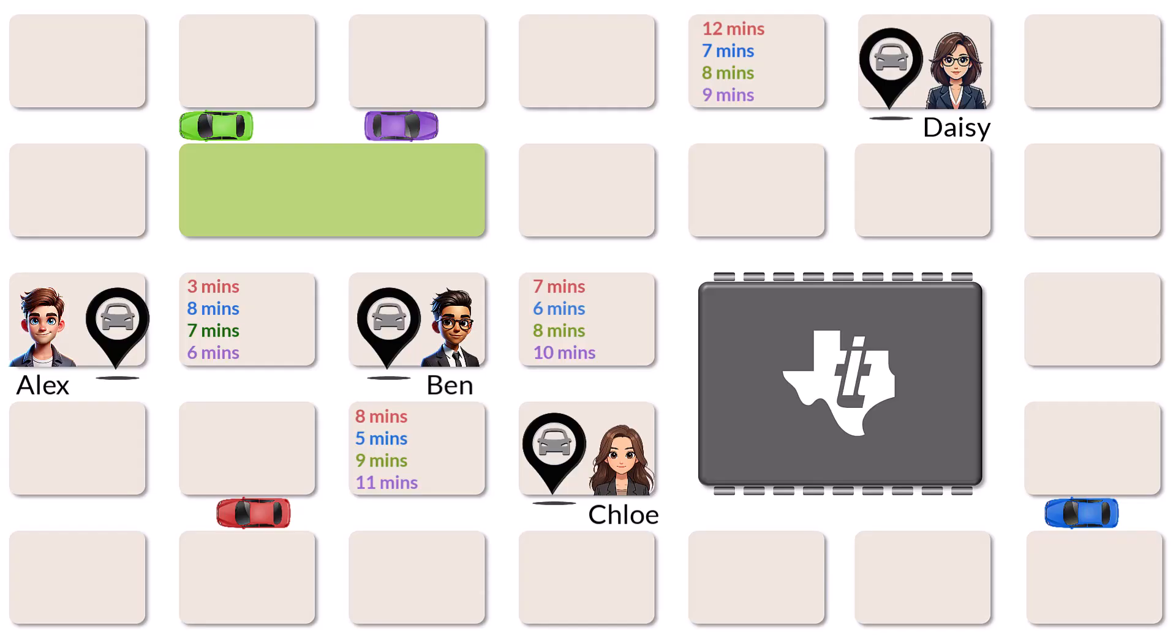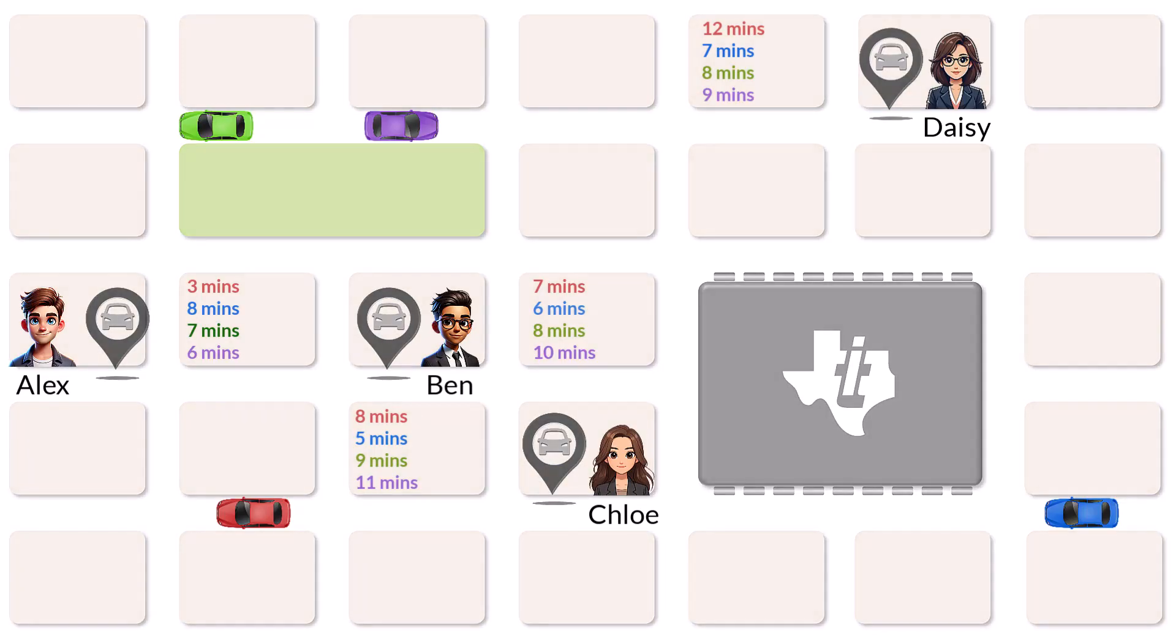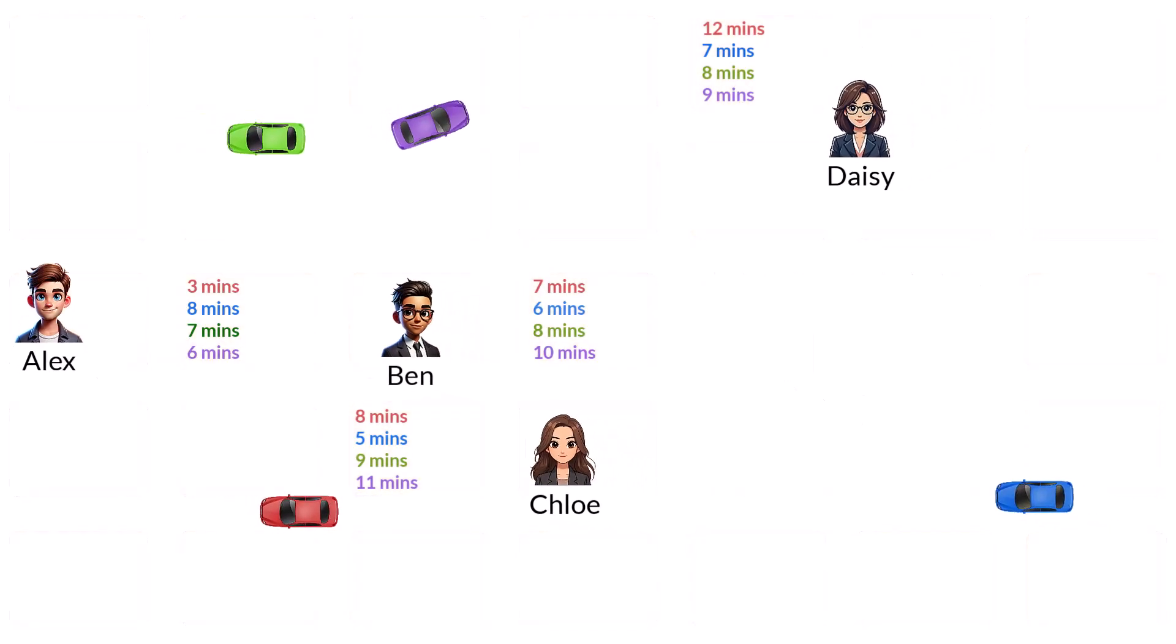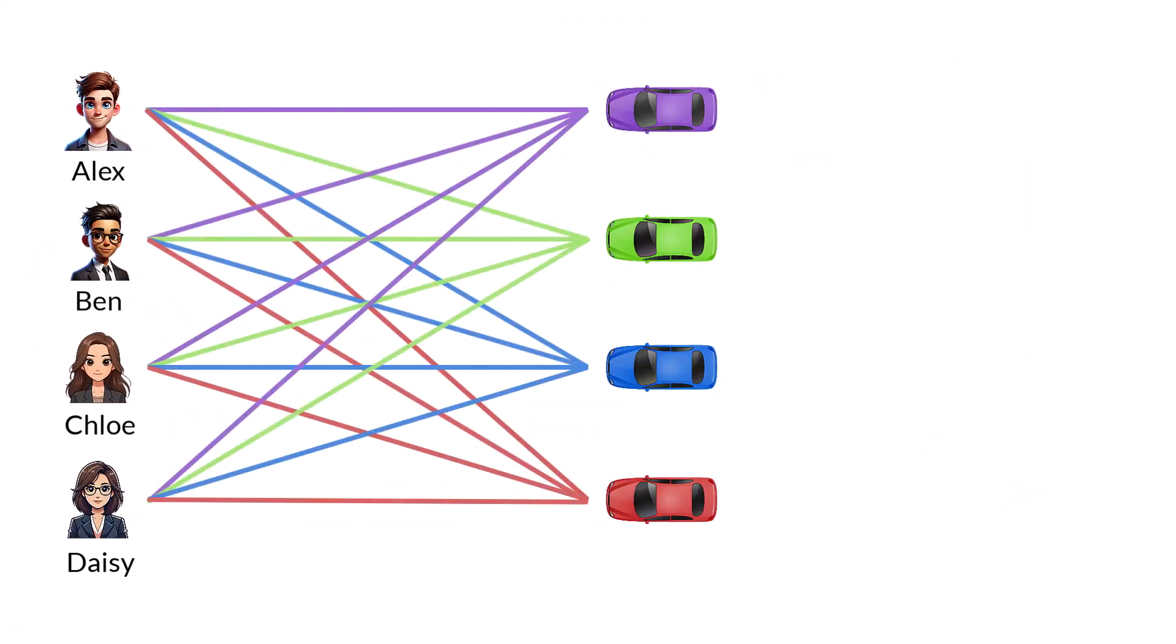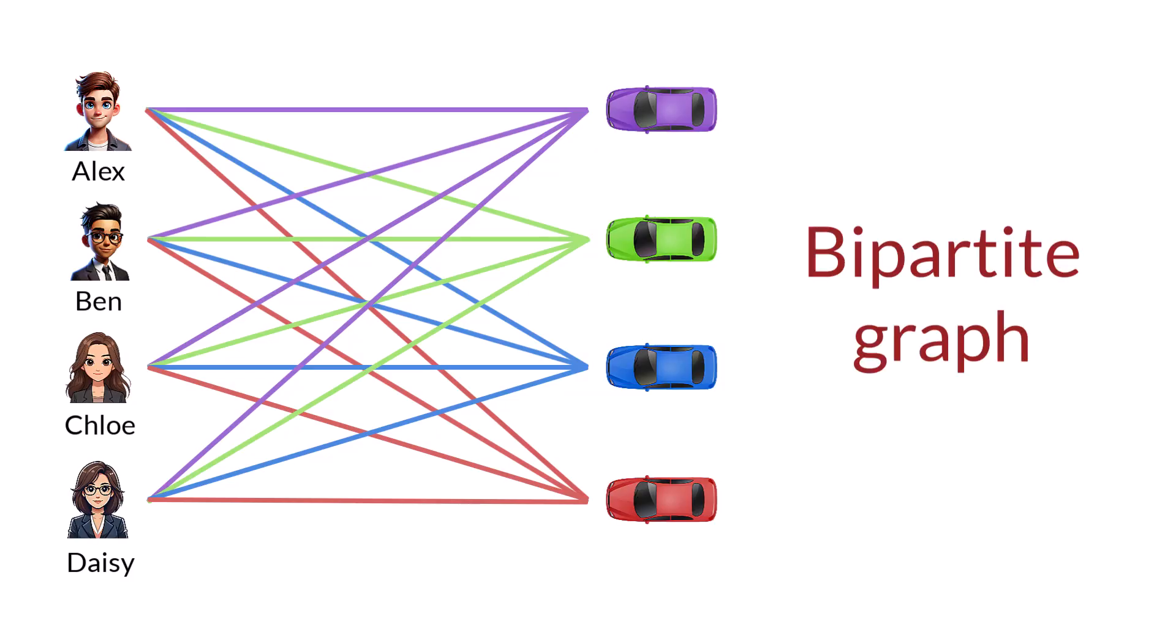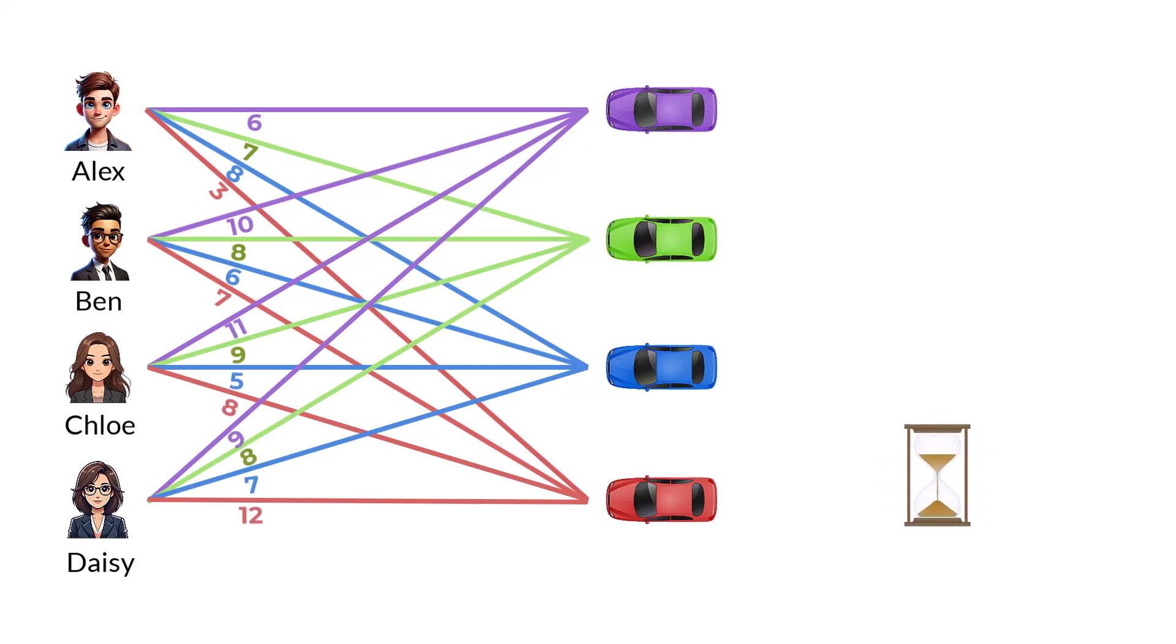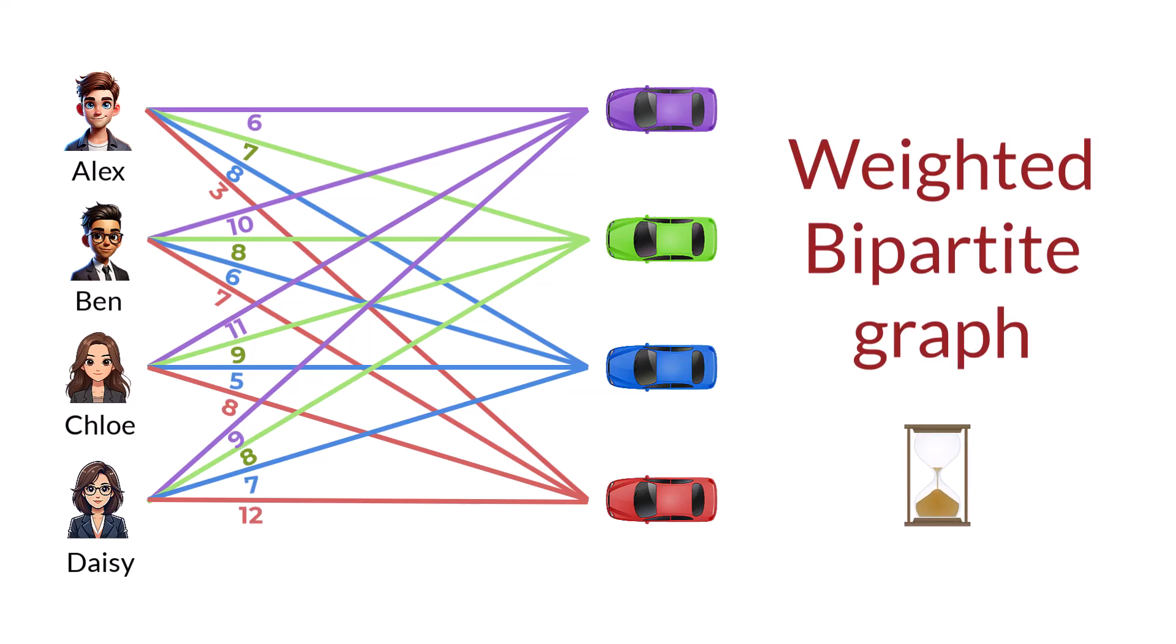We start by gradually decontextualizing the problem. We note that riders are on the left, and they map to cars on the right. Riders don't map to riders, and cars don't map to cars. So, we have a bipartite graph. We can reinstate the waiting times on each connecting line. Now, we have a weighted bipartite graph.